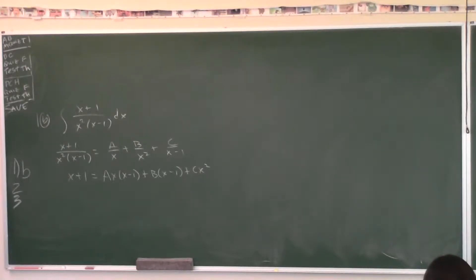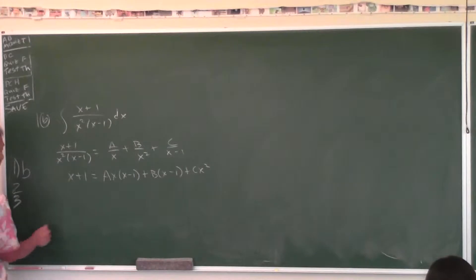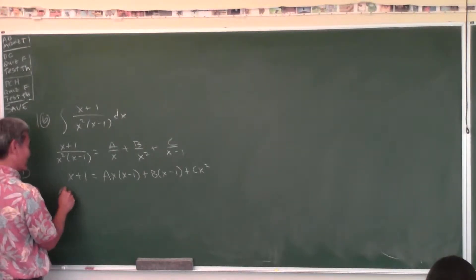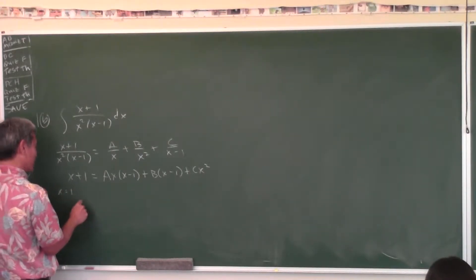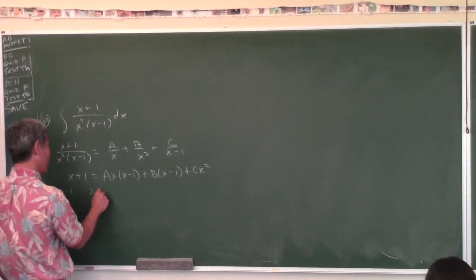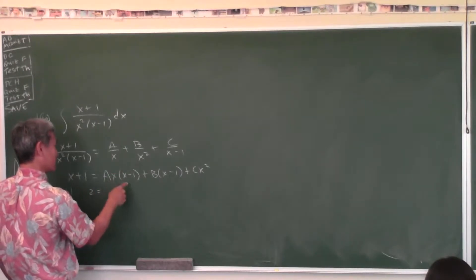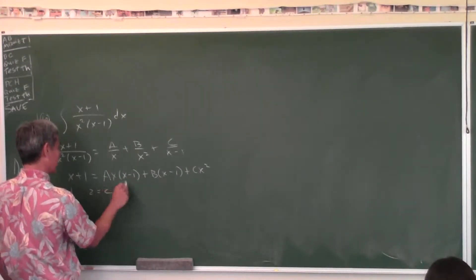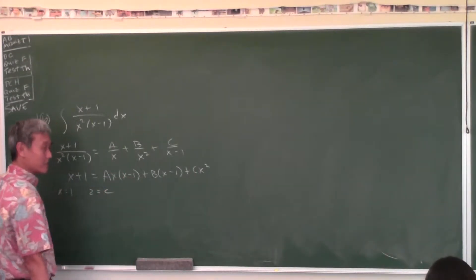Should we equate the coefficients or use Heaviside? Heaviside is good. A good number to plug in for X is 1. So you get 2 equals 0 plus 0 plus C, therefore C equals 2.